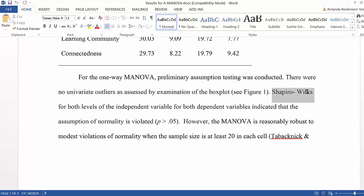Next, I note that what we did for evaluating the assumption of normality, univariate normality using Shapiro-Wilkes, for both levels of the independent variable,